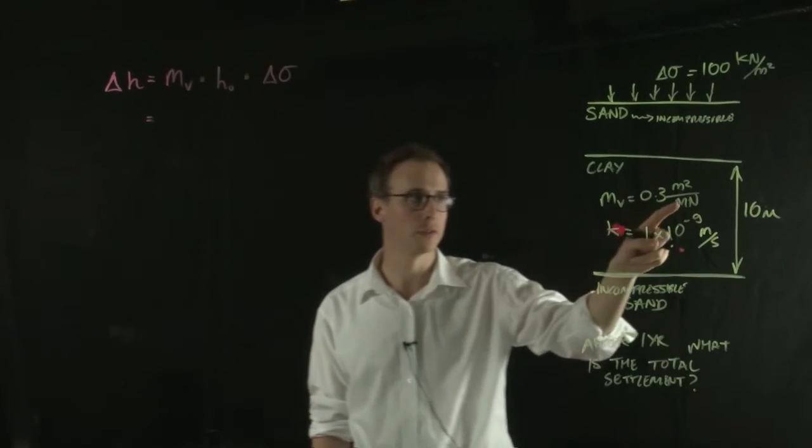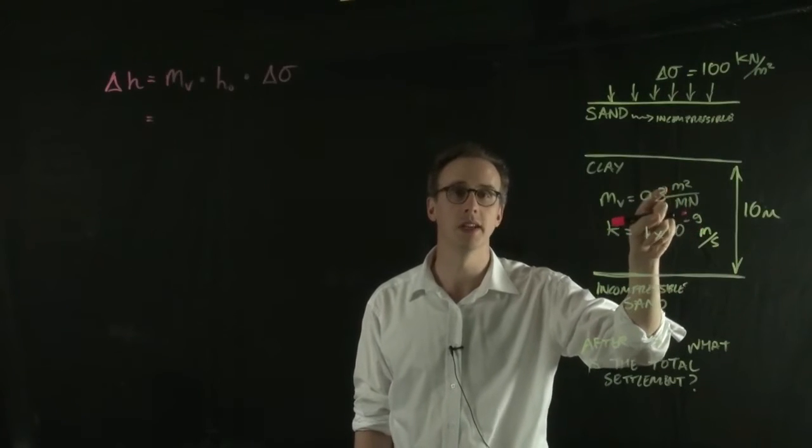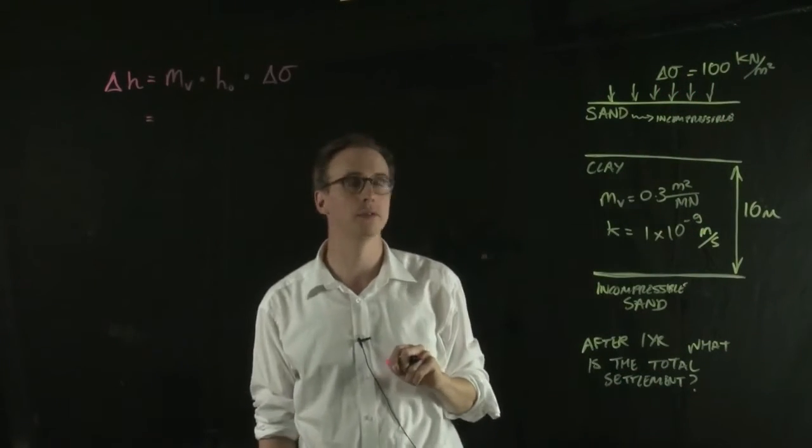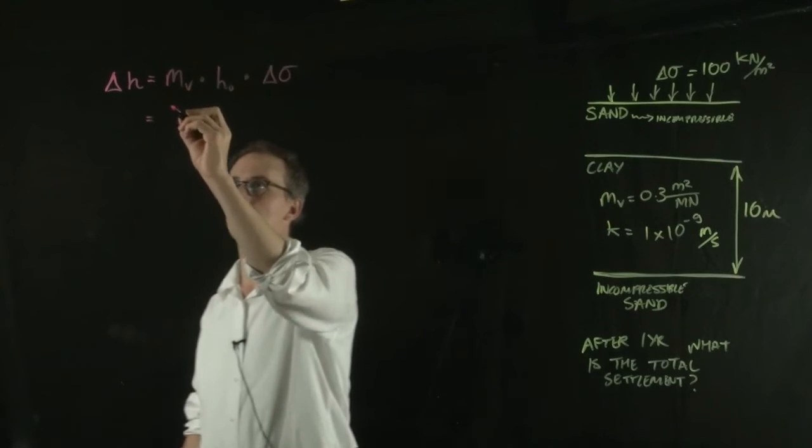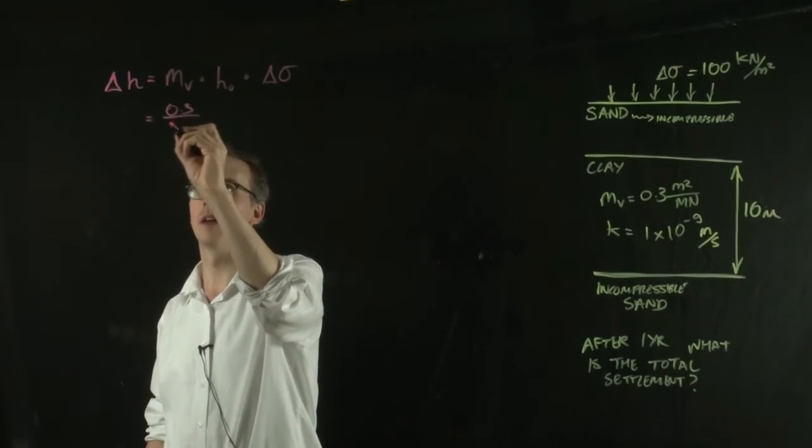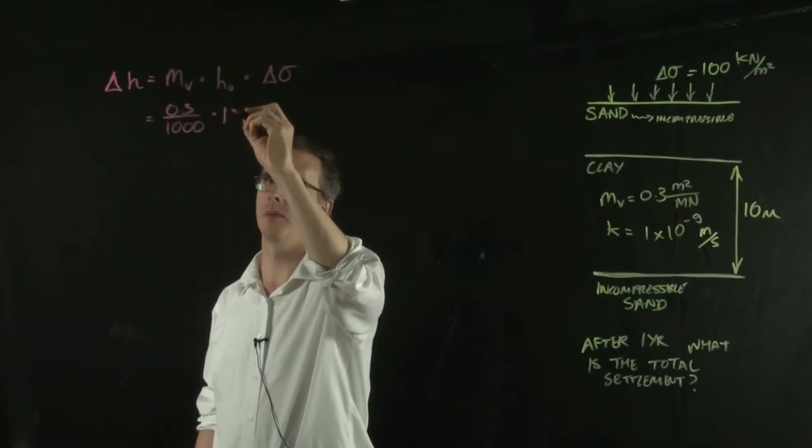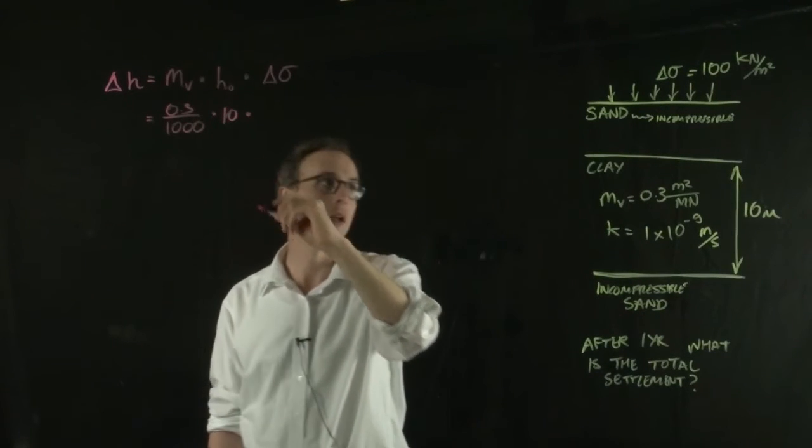And remember, we have to convert from meter squared per meganewton to meter squared per kilonewton to keep it in the same relative units of stress. So we have 0.3 divided by 1,000 to convert the units, multiplied by 10, multiplied by 100.